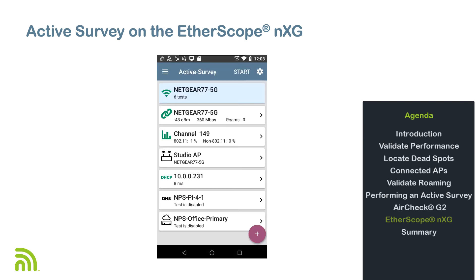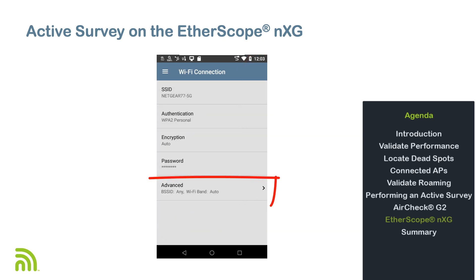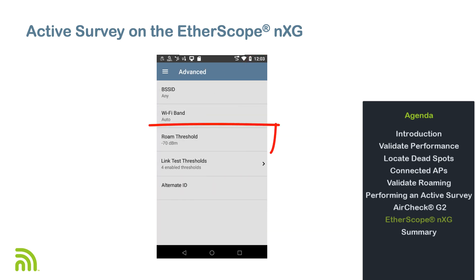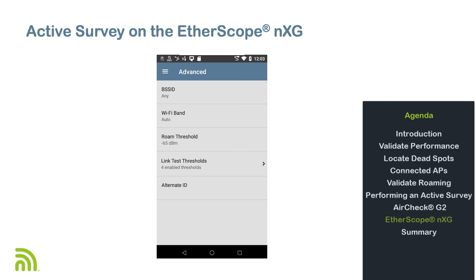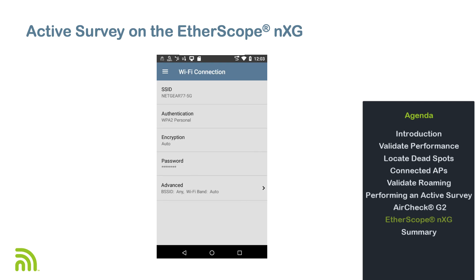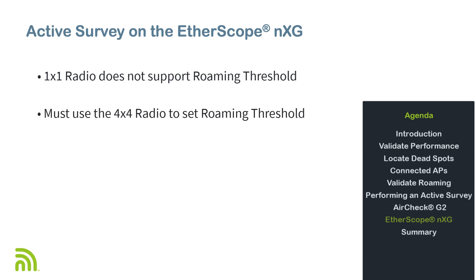Using the 4x4 radio for the active survey allows the roaming threshold to be configured. Go into the auto test profile for the wireless network to be surveyed, tap on Wi-Fi Connection, then tap on the Advanced option. On the advanced settings screen, you can adjust the roaming threshold. After changing the threshold, tap OK, then tap the back arrow until you get back to the auto test screen. Note that the 1x1 radio does not support changing the roaming threshold — you must use the 4x4 radio to simulate roaming behavior.